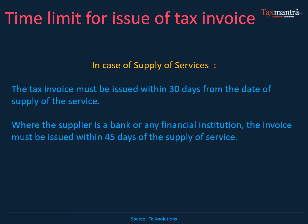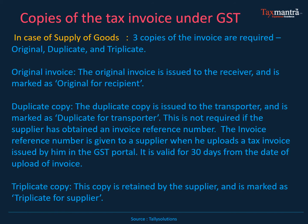What are the copies of tax invoices required under GST? In case of supply of goods, three copies of invoices are required: one original, one duplicate, and one triplicate. The original invoice is issued to the receiver and is marked as 'original for recipient.' The duplicate is issued to the transporter where there is movement of goods.